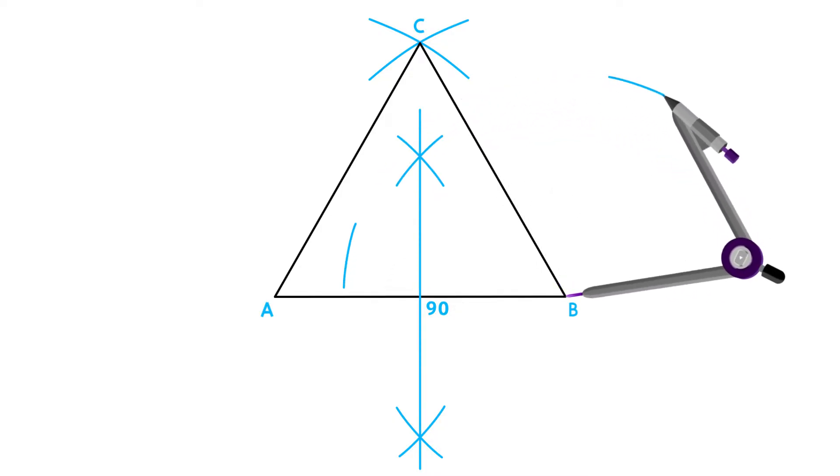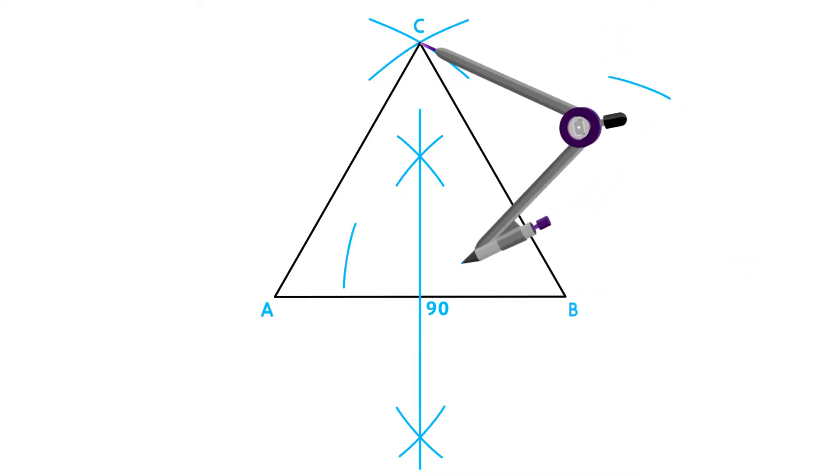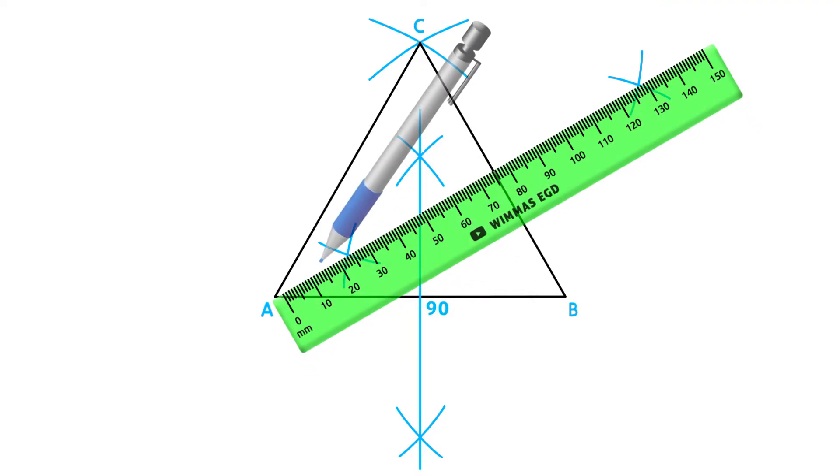Using this same measurement, place your compass on point C and draw your last two arcs as seen in the video. Complete your bisector by drawing a line through these two intersecting points.